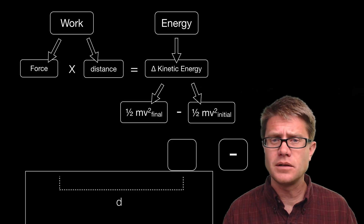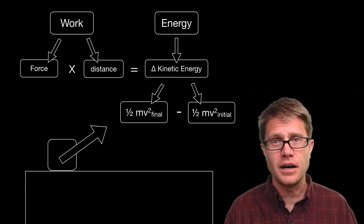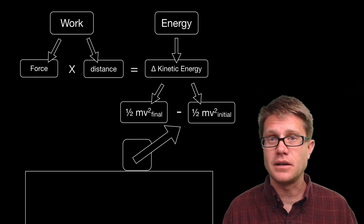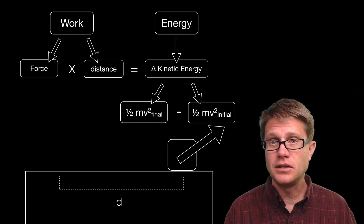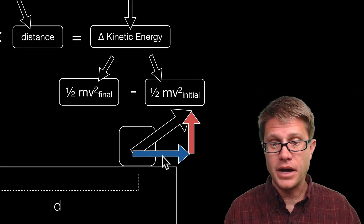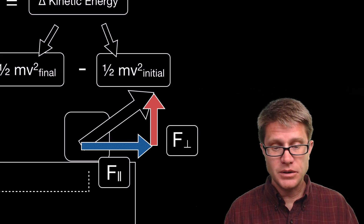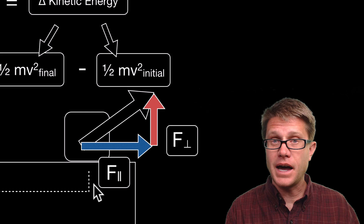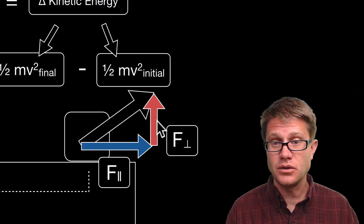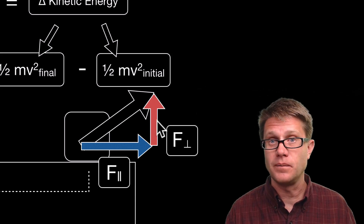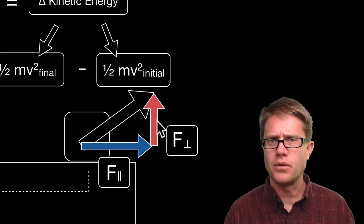Now it is not as simple as that, because sometimes you are going to apply a force and it is not going to be in the same direction as the motion. Let's say we are pulling on that object with a rope at an angle, moving it in that direction. We have to break down that force vector into its two component vectors: the force parallel, which is in the direction of the motion, and the force perpendicular. It is only the force parallel that is doing work. The perpendicular force is not doing any work since the motion is not in that direction. So lots of times when solving problems you have to break that force down into its component force.